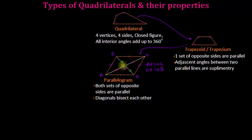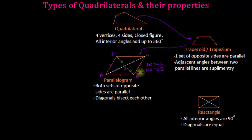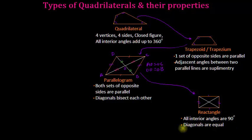If we make all angles of the parallelogram equal, each angle becomes 90 degrees, and we get a rectangle. The rectangle inherits all properties of the parallelogram — both sets of opposite sides are parallel and equal, and its diagonals bisect each other. In addition, all interior angles are 90 degrees, and a specific property of rectangles is that the diagonals are equal: diagonal AC equals diagonal DB.